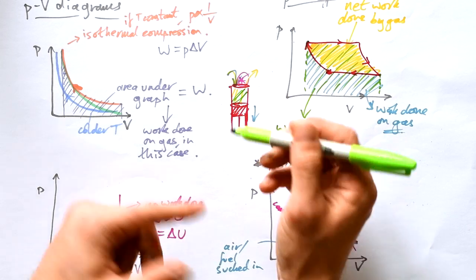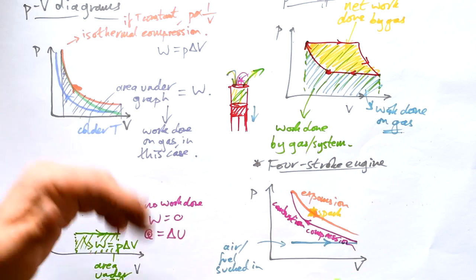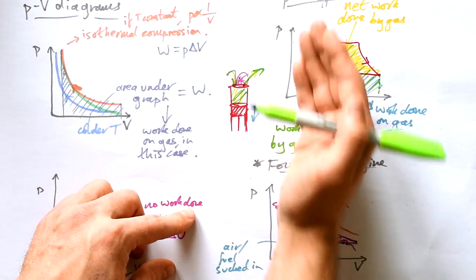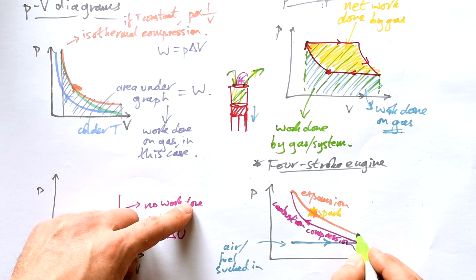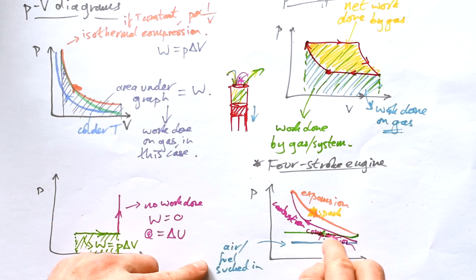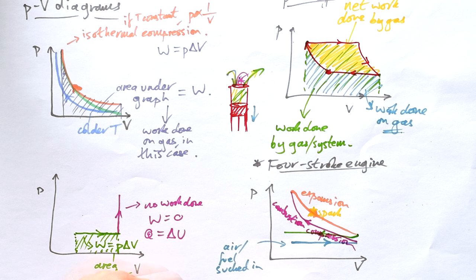And then last but not least, piston's down here, we have all the exhaust fumes still in the cylinder. We need to get rid of those. That's what happens. The piston goes up one more time and pushes all of the air out again. That's just constant pressure. And so we have a straight line going across there. As we push the gas out, it's at a slightly higher pressure than what we suck the air and fuel mixture in with.